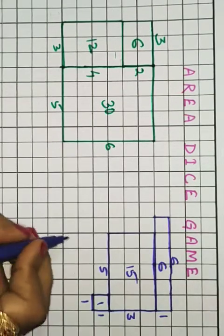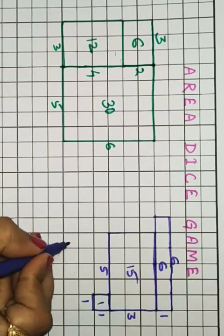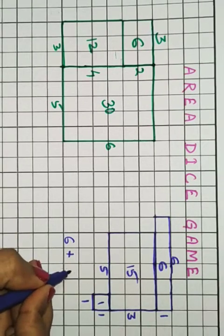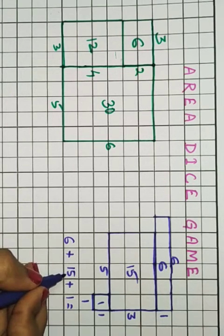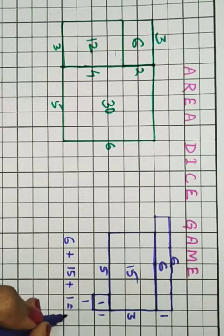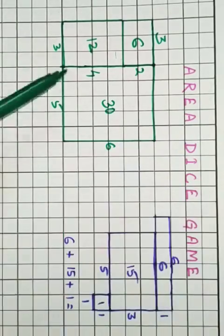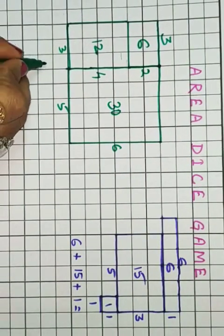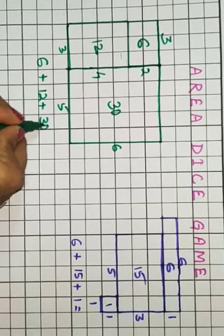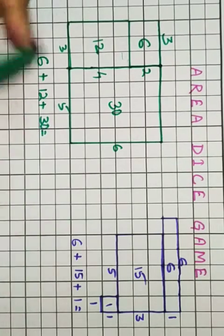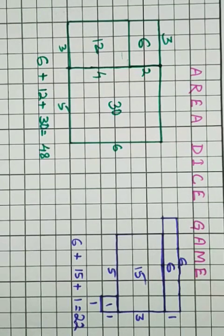Let us add after three chances. Let us add the numbers. Blue is six plus fifteen plus one. The green one is six plus twelve plus thirty. Now we will add for both of them.